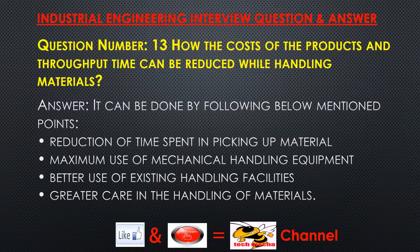Question number 13: How can the costs of products and throughput time be reduced while handling materials? Answer. It can be done by: reduction of time spent in picking up material, maximum use of mechanical handling equipment, better use of existing handling facilities, and greater care in the handling of materials.